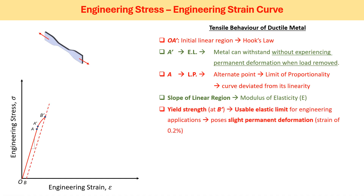When we keep stretching the material further, we observe that the material's behavior becomes non-linear. This non-linear behavior is indicated by point B, and this certain amount of plastic deformation is near 0.2% of strain. The 0.2% strain line, which is parallel to the elastic flow curve, cuts the actual flow curve at point B', which is known as the yield strength of the material — the slight permanent deformation where the material starts deforming plastically.